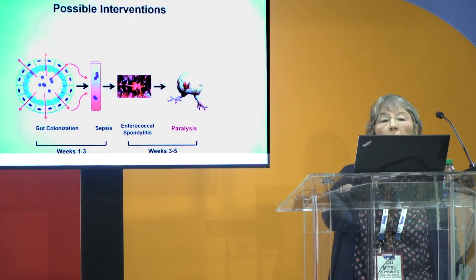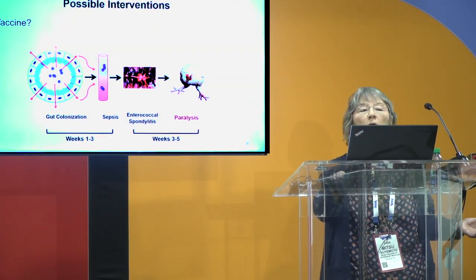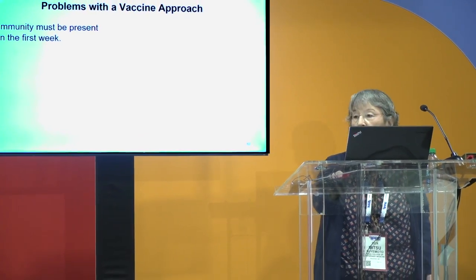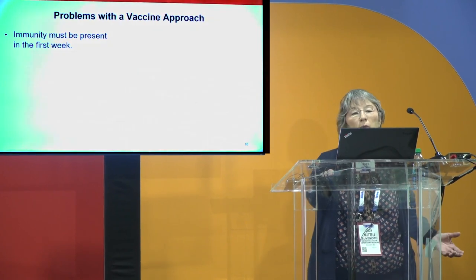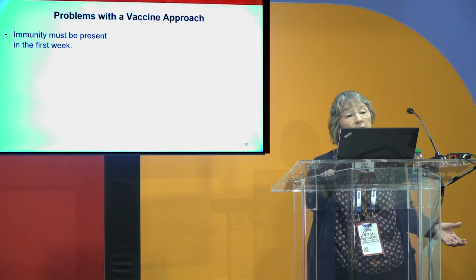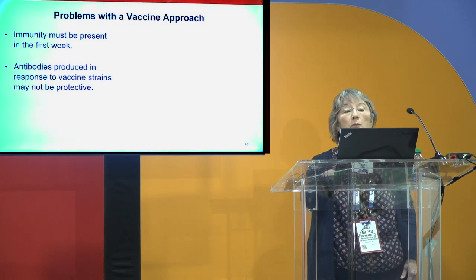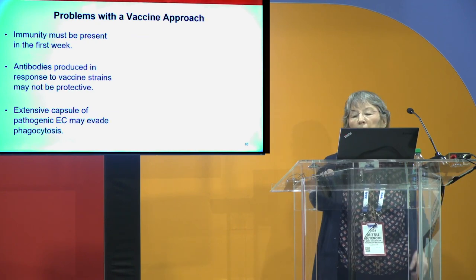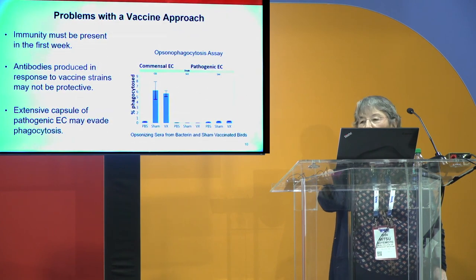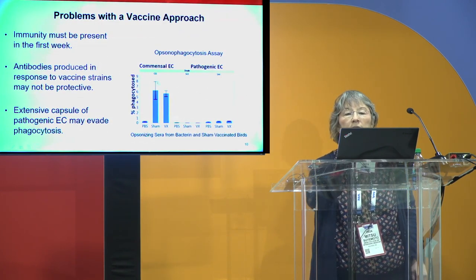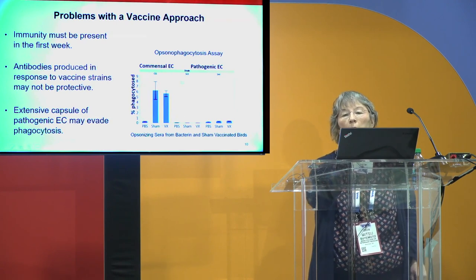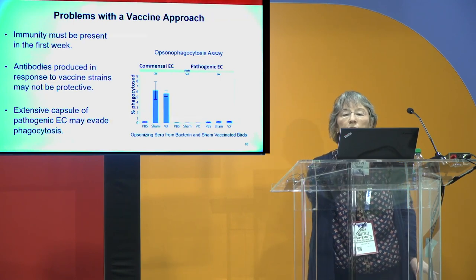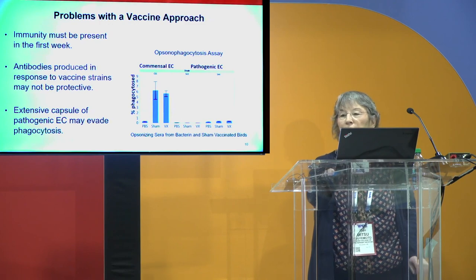When considering interventions, vaccination is the obvious first thought — circulating antibodies to prevent the sepsis stage. But there are problems. Immunity must be present in the very first week and continue for multiple weeks, so you can't just vaccinate the chicks or just vaccinate the breeders. We also know antibodies produced in response to vaccine strains may not be protective. That extensive capsule — with those conserved genes in pathogenic strains — may allow the bacteria to evade phagocytosis. We confirmed this with opsonophagocytosis assays: commensals are recognized and phagocytosed by macrophages, but even following opsonization, pathogenic strains are not recognized. That capsule provides a perfect cloak of invisibility.